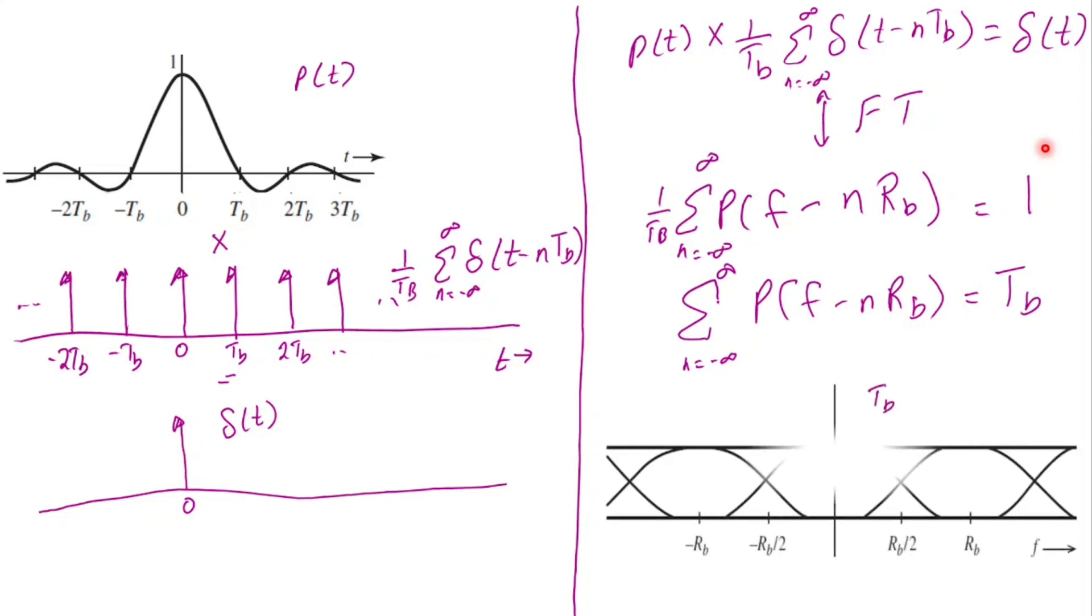Hence in the spectrum plot, as one copy of the spectrum of p of f falls down, other is rising and the sum will always yield a constant value which is Tb. This is simply a Nyquist criterion of 0 ISI observed in the frequency domain. And this is dual with the time domain criterion observed earlier.